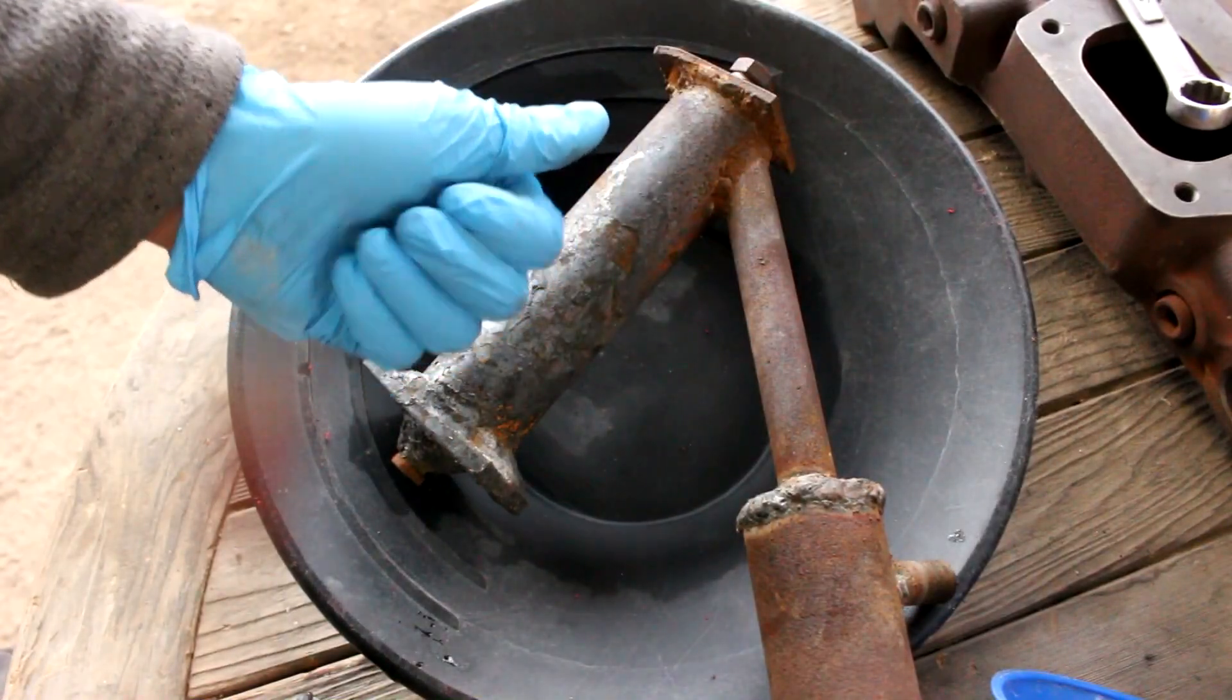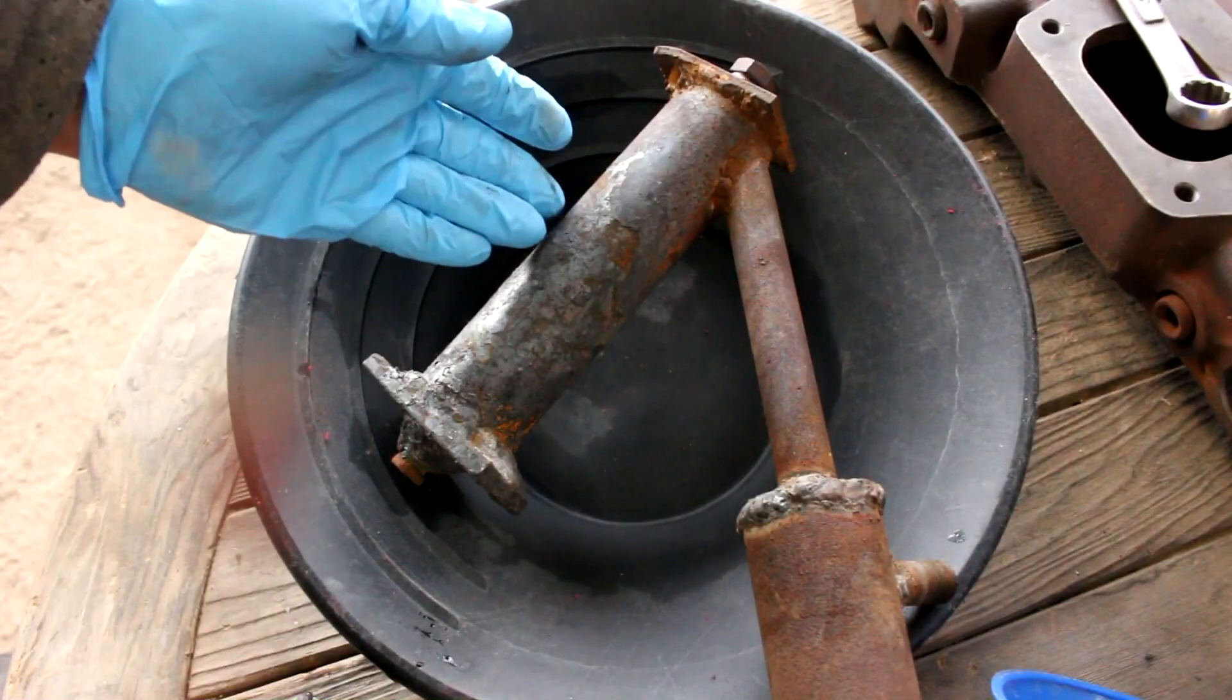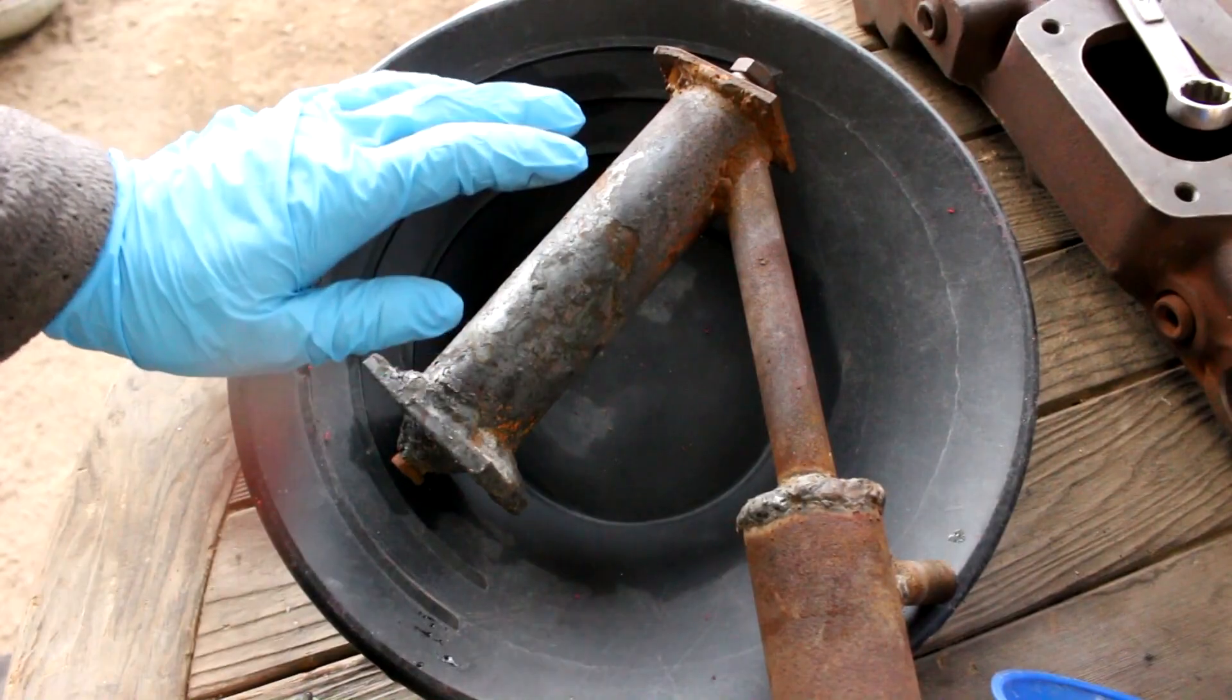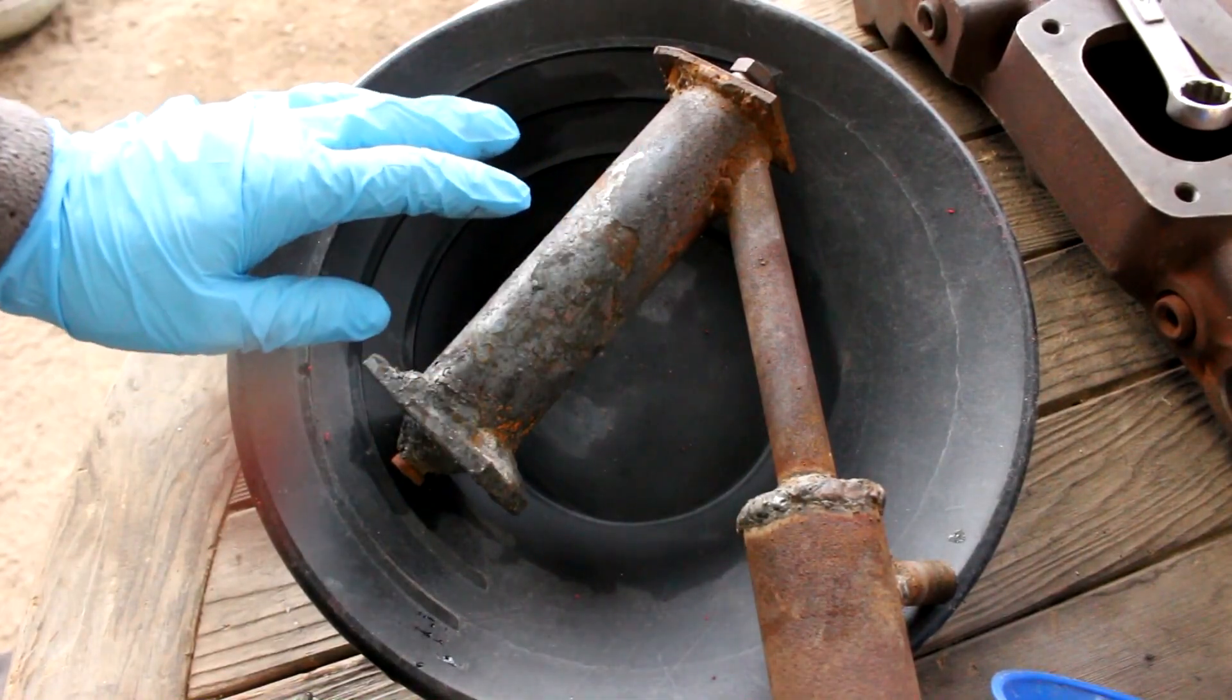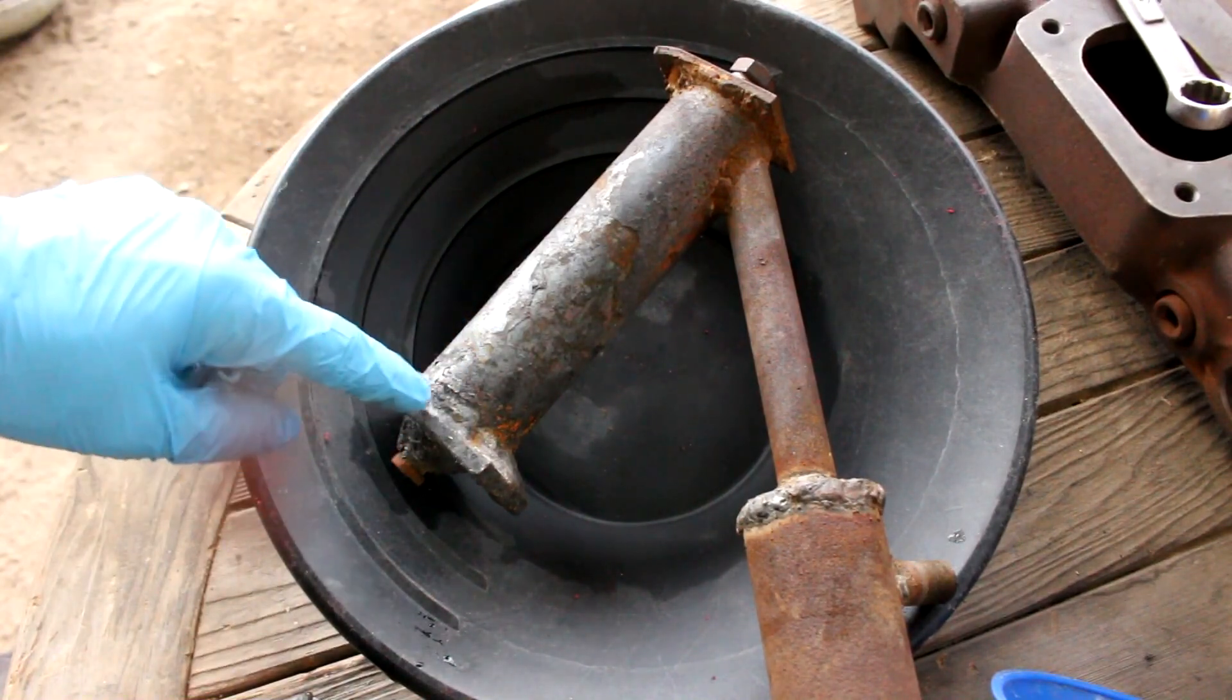Alright everyone, welcome back to Cody's Lab. So this is my mercury distillation apparatus that I built in a previous video, link in the description. I just got through using this to distill several hundred pounds of mercury and it worked flawlessly right up to the point where the tube somewhere got plugged.